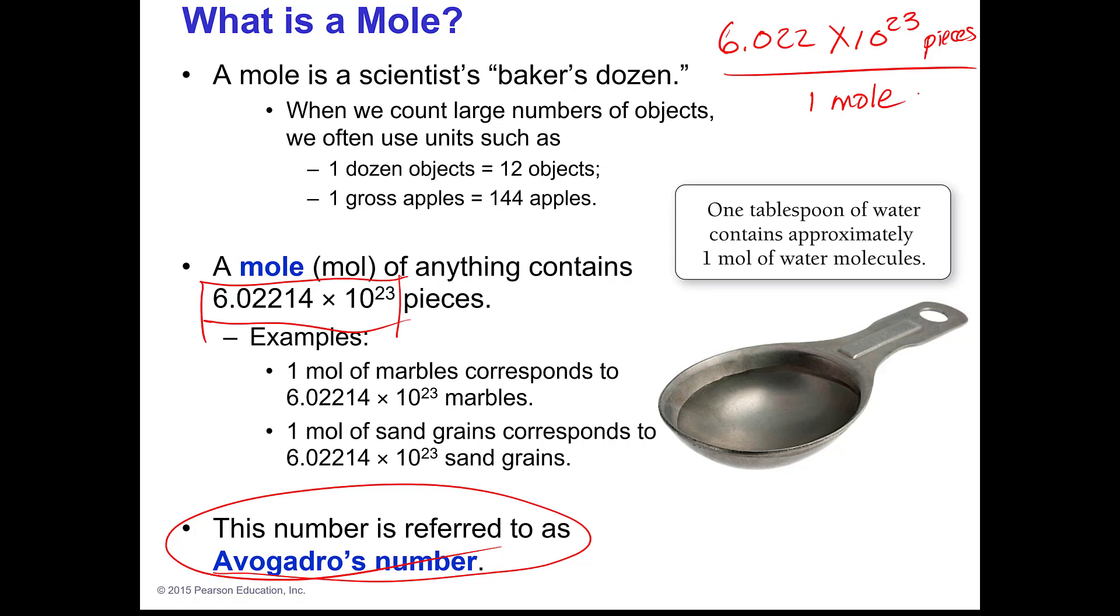It's the same as if you think about a dozen. A dozen is 12. So if you have 12 donuts, that's a dozen donuts. They mean the same thing. If you have one mole of something, then you have 6.022 times 10 to the 23rd parts of that thing, and that's what causes it to be a mole.